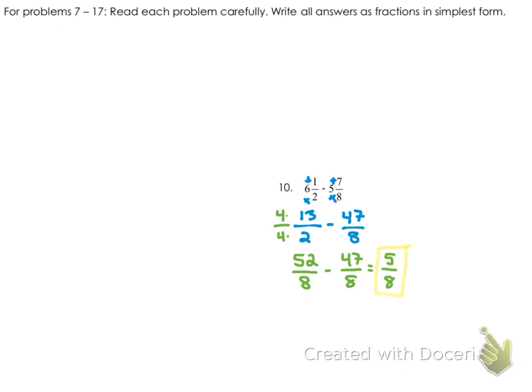So that was a lot quicker. If we had done the stacked method, we would have ended up with 6 and 4 eighths on top, minus 5 and 7 eighths. And we would have had to borrow because of the 4 in the numerator, so we would have had to make the top 5 and 12 eighths. So that whole idea of borrowing can get a little tricky, and you would have been left with 5 on the top. You would have had 12 minus 7, which was 5, and 8 remained in your denominator, and then 5 minus 5 is 0, so you would have just had 5 eighths as your answer with that method as well.